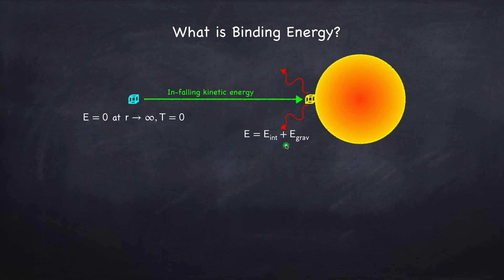If any of the kinetic energy is lost to radiation, then the total energy will be negative and this volume of mass will be bound, meaning you'll have to put energy back into it to send it back out to infinity at zero temperature.